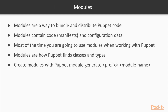So what are Puppet Modules? Modules are a way to bundle and distribute Puppet code. Modules contain code — Puppet manifests and configuration data for these manifests. Most of the time when you are using Puppet you are going to work with modules. For example, there is Puppet Forge where you can download pre-built modules. Modules are also how Puppet finds classes and types.